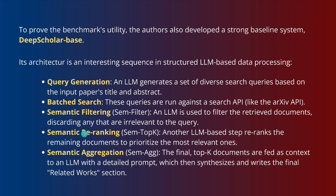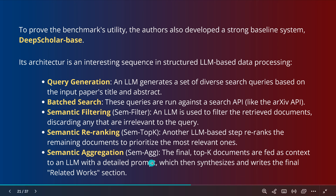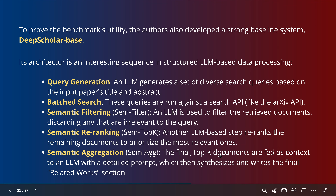So we have to do re-ranking to get down to the top 20. An LLM-based step re-ranks the 200 remaining documents — a new prioritization: what are the most relevant among these 200? Then if we have the top 20, we do semantic aggregation of the content of all 20 papers. The final top 20 documents are fed as context to an LLM with a detailed prompt for synthesis, and the LLM writes the final related works section.